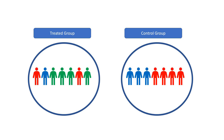We always face the problem of selection bias, and there are always factors that come from the backdoor and play their part. We cannot conclude the results with accuracy as to whether the treatment has actually impacted the treated group or not. In order to deal with this specific selection bias problem, there are multiple techniques, but in today's video we'll be talking about the propensity score matching technique.